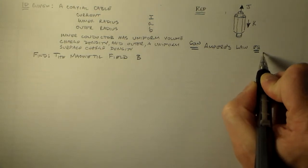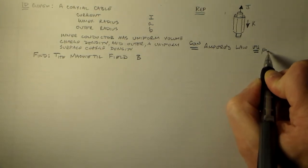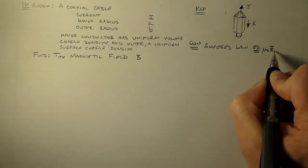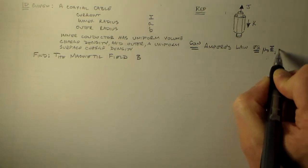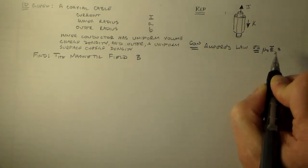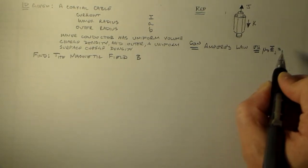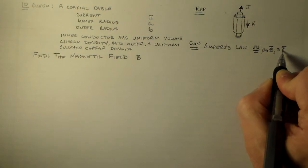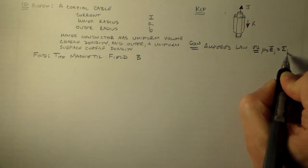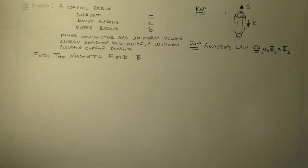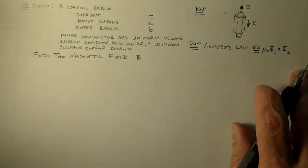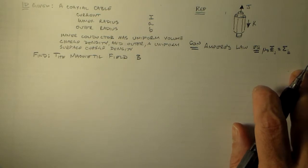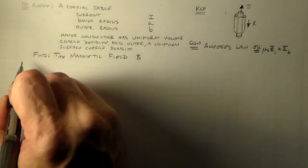Our equation for Ampere's law is mu naught times the current flux through some surface, which is equal to that path integral of the magnetic field.